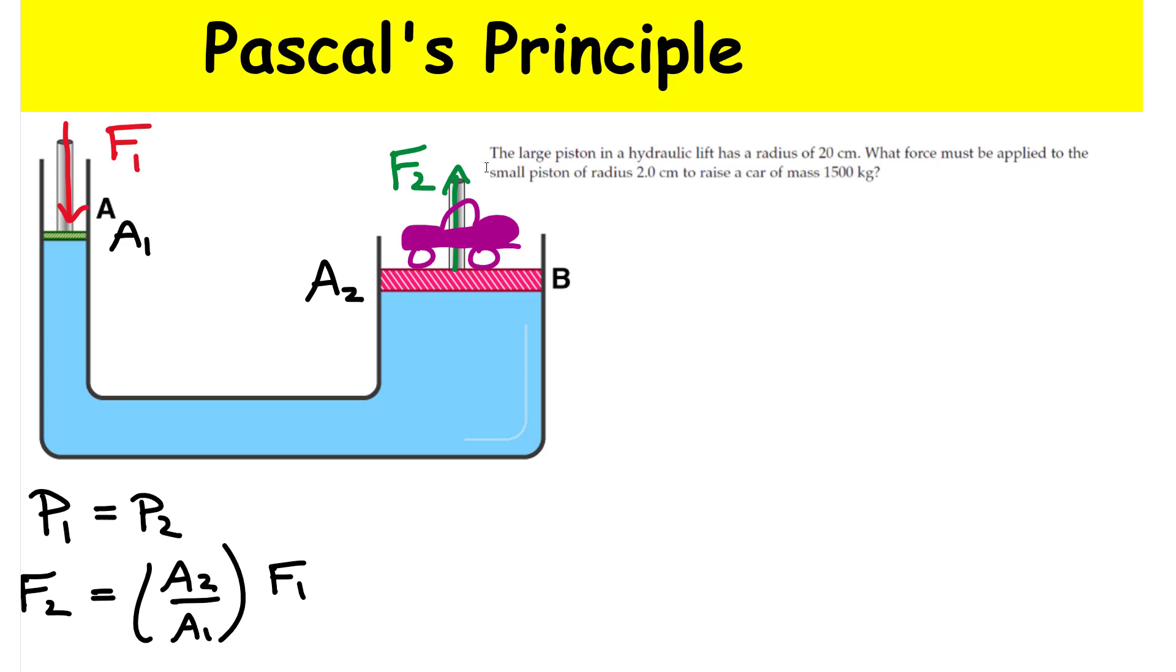Here's the problem I want to solve. We have a large piston in a hydraulic lift system here. This one here has a radius of 20 centimeters, 0.2 meters. They want to know what force must I apply to the small piston, so we're really looking for F1. The radius of this guy is a lot smaller, R1 is only two centimeters, 0.02 meters, 10 times smaller than this guy.